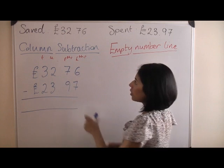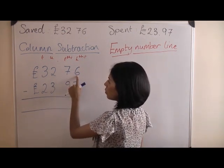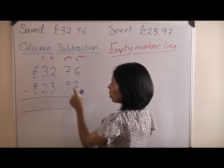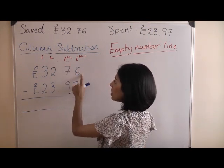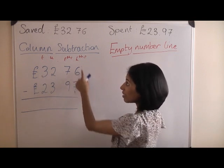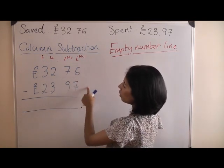Remember, numbers that go after the decimal point are less than a whole. 76 pence is less than a pound, 97 pence is less than a pound. 70 is a tenth, 90 is a tenth. Six pennies is a hundredth, because a hundred pennies make a pound, so they are hundredths. Seven pennies is also a hundredth, and so on.